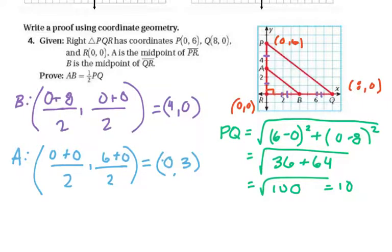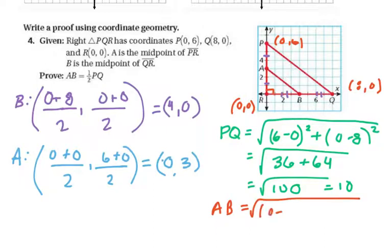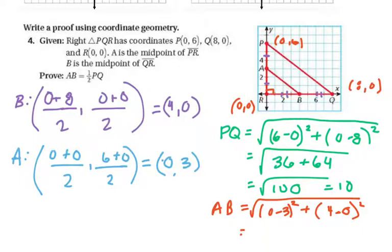We also need the distance of AB. The distance of AB is the square root of (0−3)² + (4−0)². Since squaring removes negatives, that's √(9 + 16) = √25 = 5. So AB is 5.